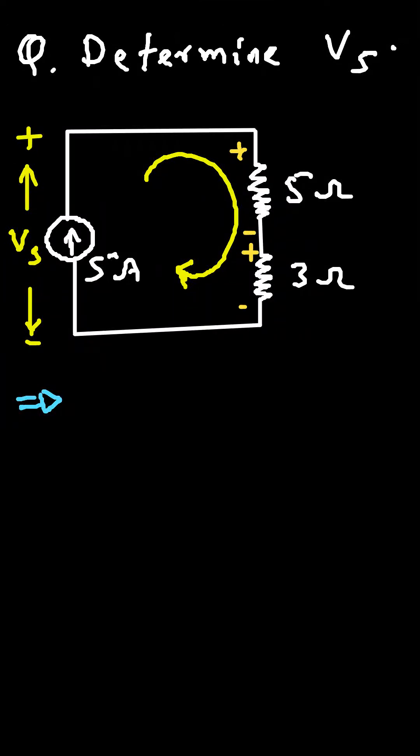So first of all, let's apply KVL, Kirchhoff's Voltage Law. Let's say we are starting from this point, so from here we go again back to here in a loop.